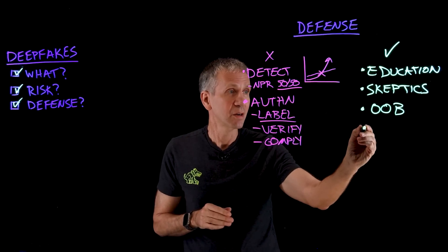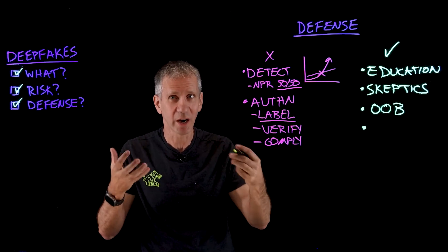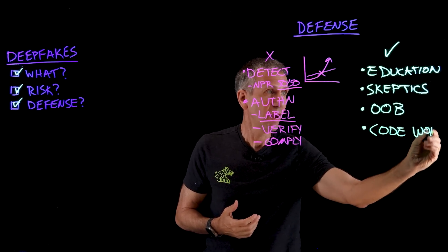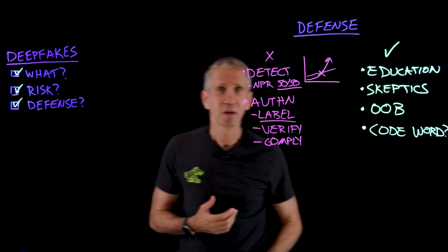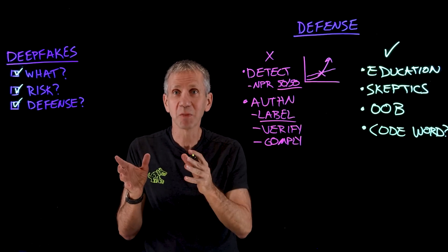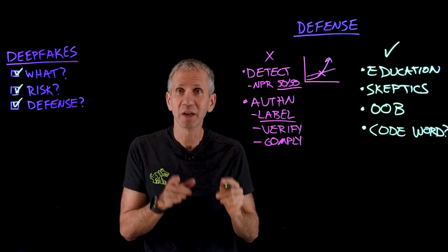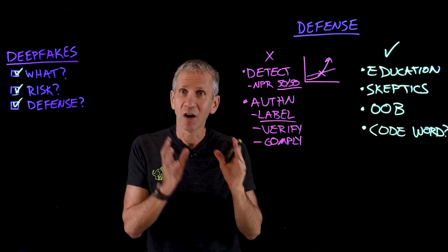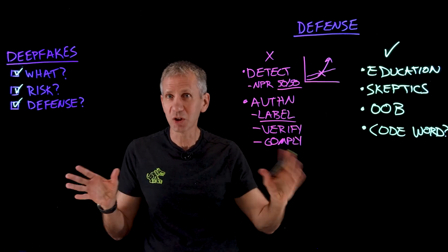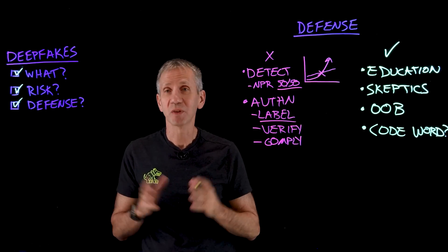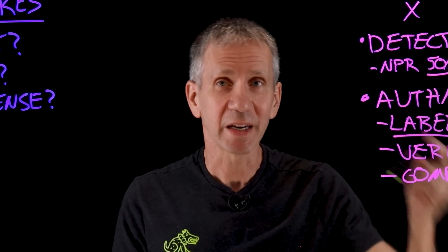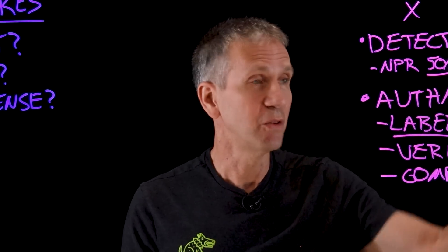A lot of people have tried to get smart about this and ask: in that grandparent scheme, what if in advance we agreed on a code word? In other words, I tell all my family members — if I ever call you asking for money, ask me what the code word is, and if I don't know it, then it's probably a deepfake. Because the deepfake generator can generate my voice, but it doesn't know all the things that I know. So this sort of secret knowledge pre-shared in advance would be a way to tell. I put a question mark on this, though — there is a special type of attack that defeats even that.